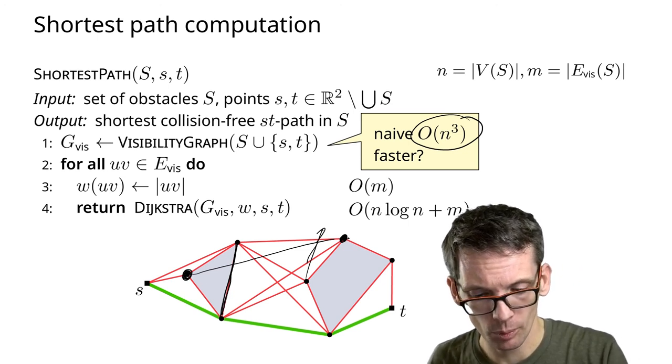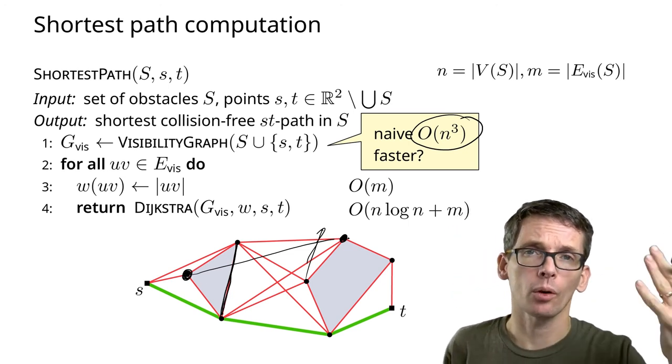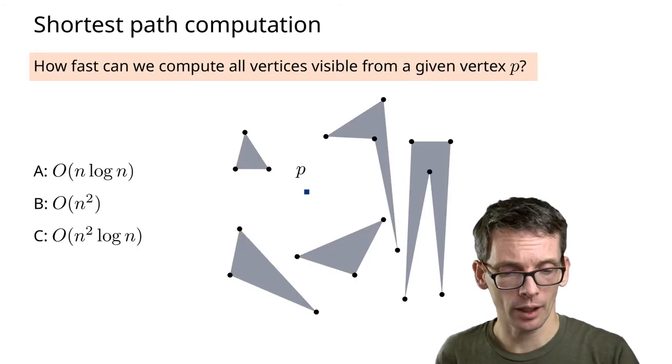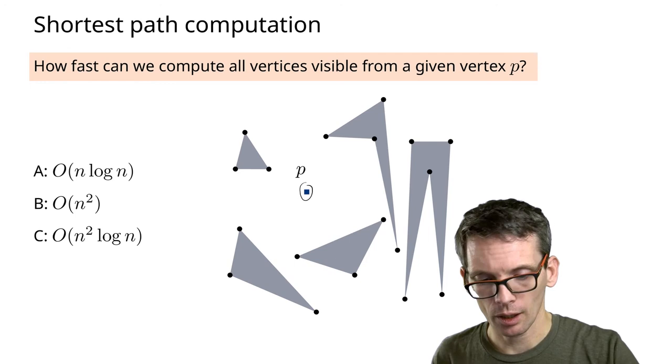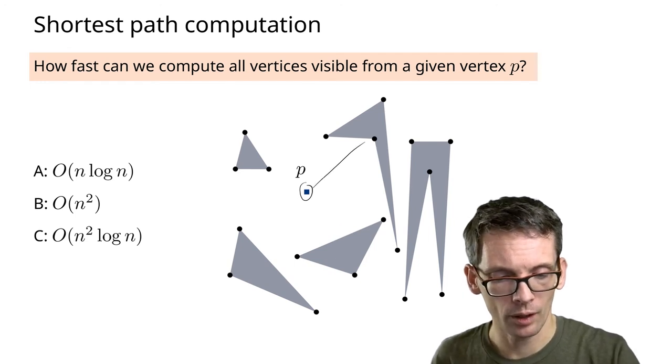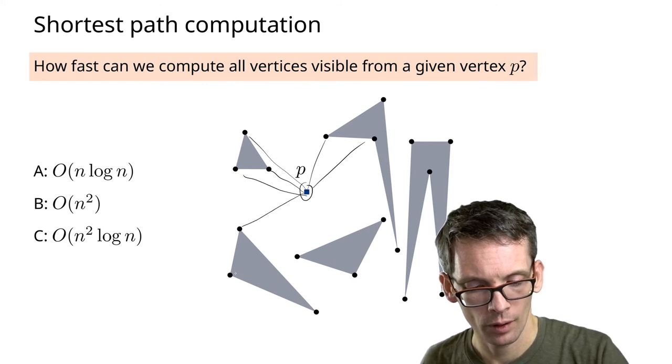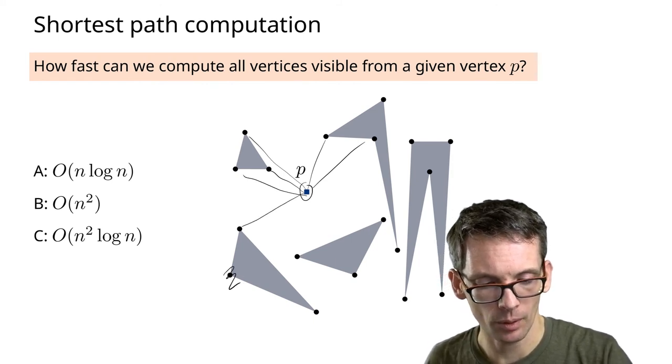Let's say I have a point, some point here, I want to compute all vertices that are visible from that point. So that's my scenario, I have a point, I have polygons, I want to compute every vertex that is visible. This one back here is not visible.